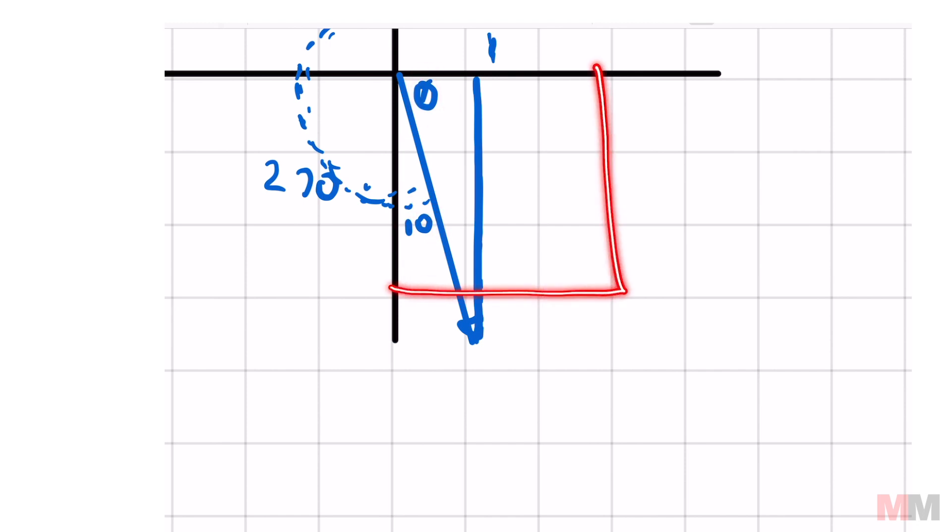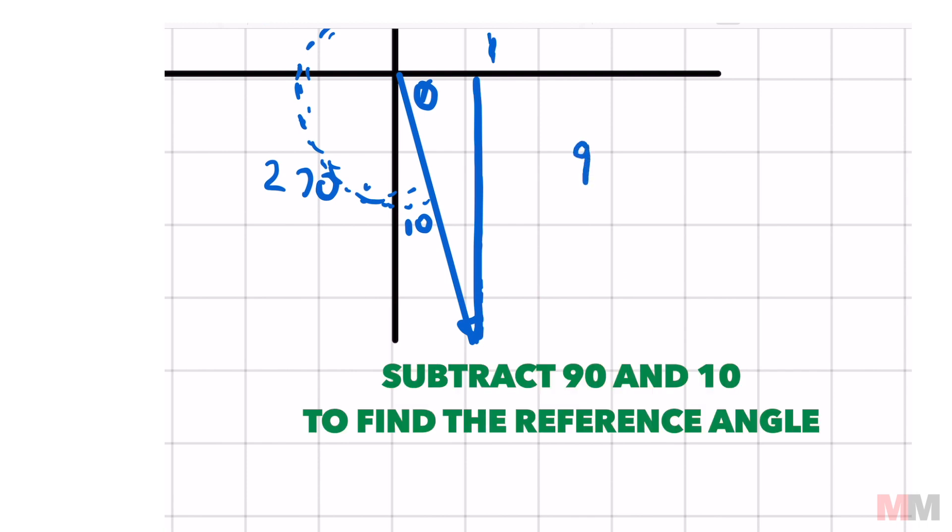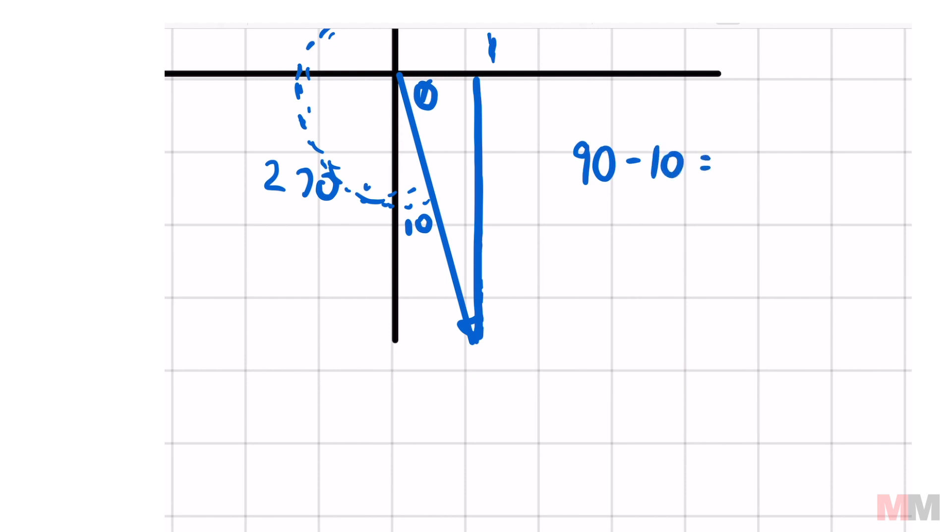the whole thing equals 90. So all you have to do, I mean, you probably figured it out by now. But the math behind it is just take 90 and subtract 10, and your theta, or reference angle, is 80 degrees.